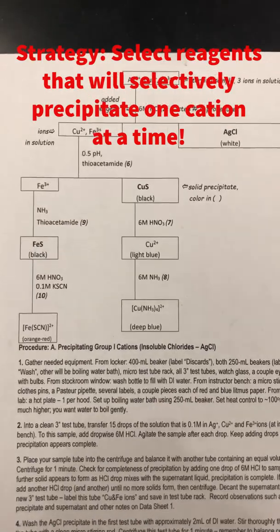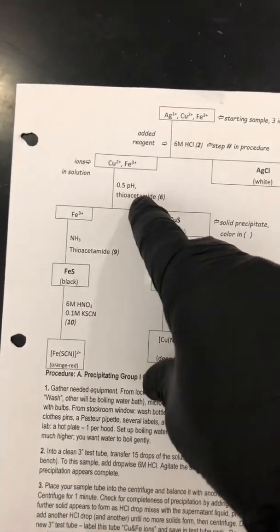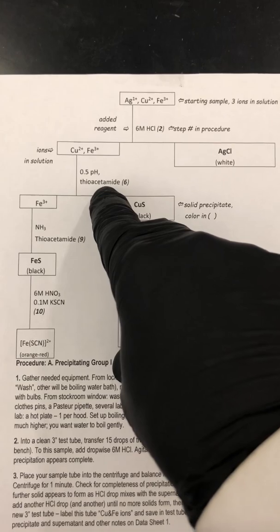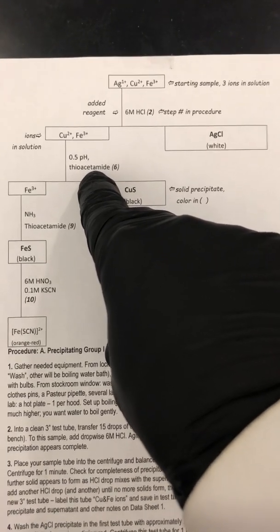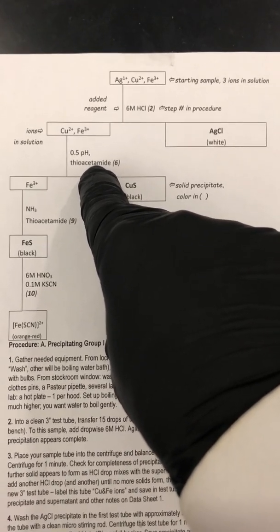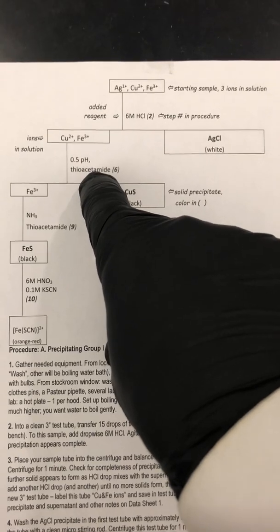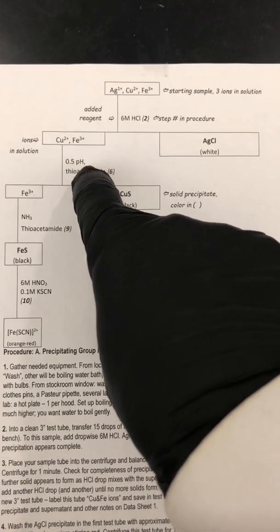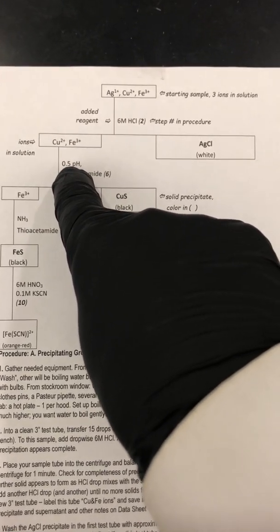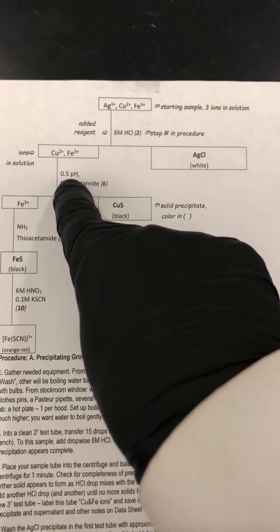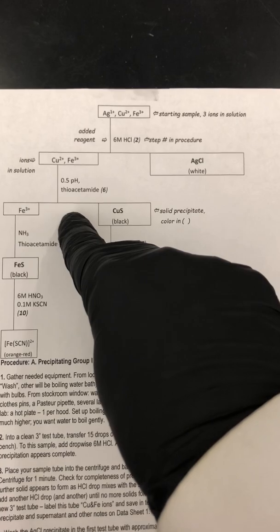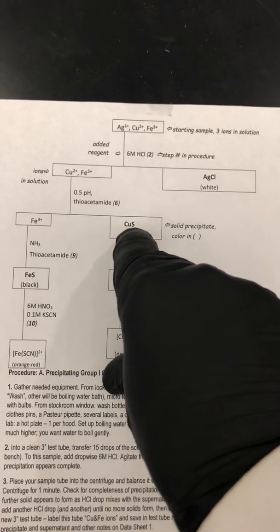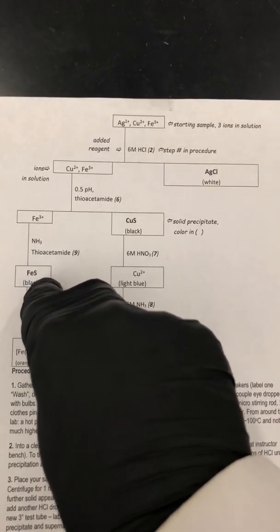In this case, we're going to precipitate these ions by using something called thioacetamide, and later in the semester, those of you in Chem 1B will understand how that works. Notice that in order for this separation to work, we had to make sure the solution is acidic — 0.5 pH means that it's acidic. That way, we will selectively precipitate the copper II sulfide while leaving the iron III ions in solution for further analysis.